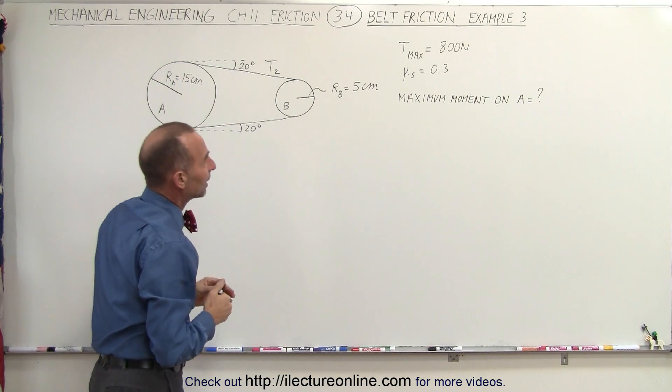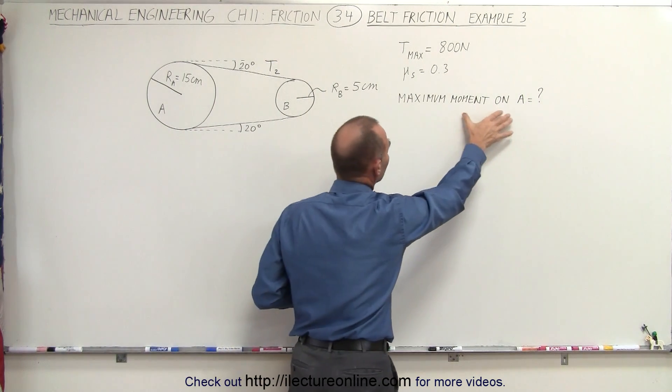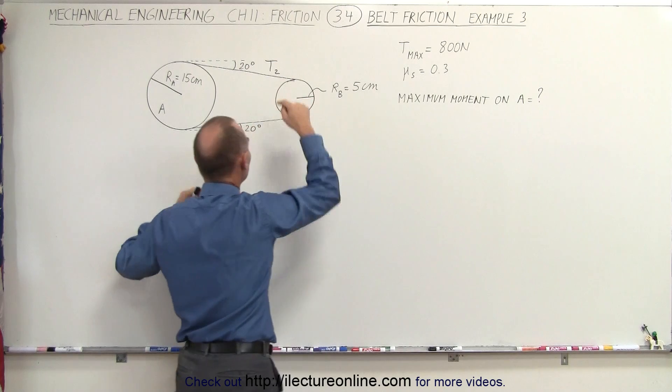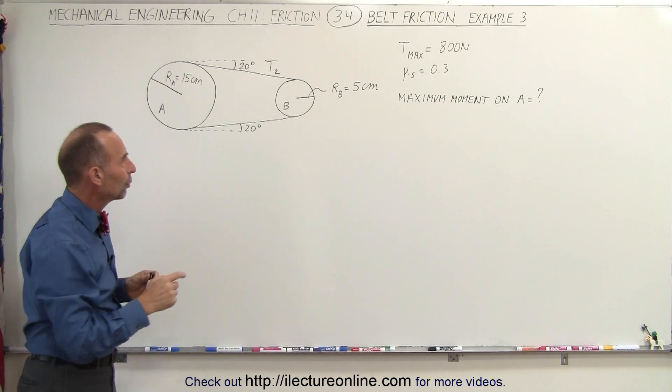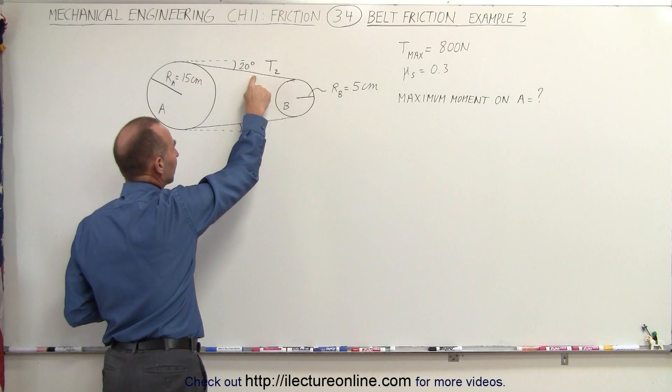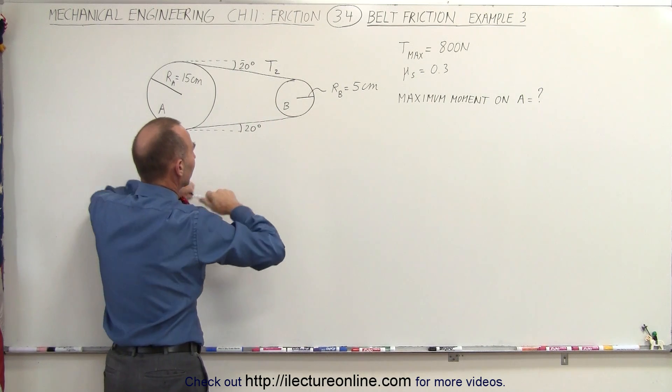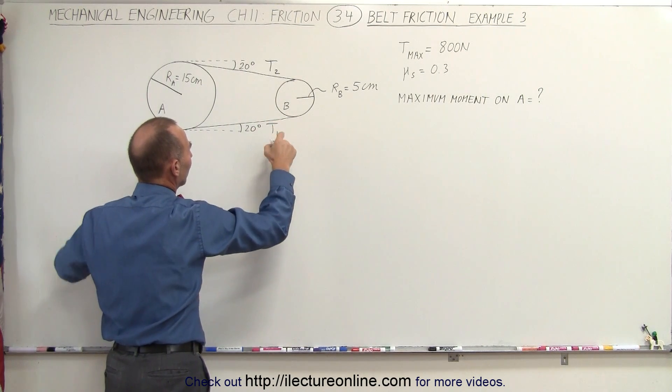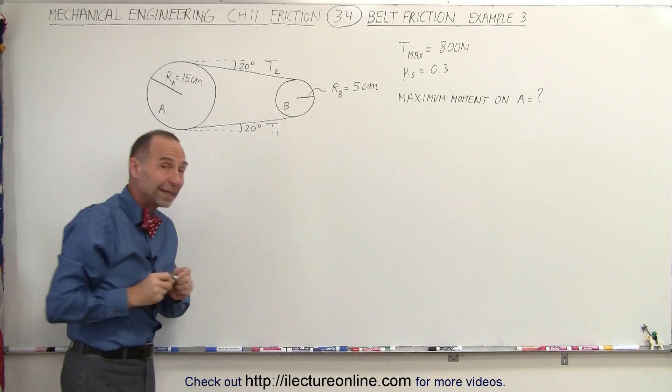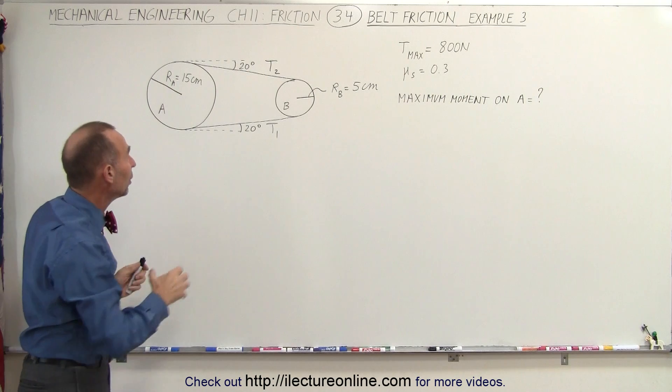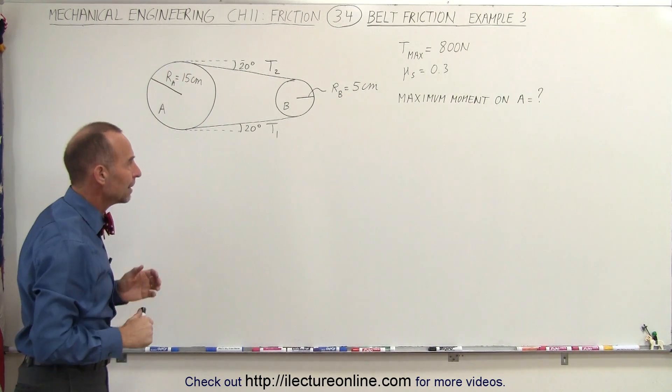What we're trying to calculate is the maximum moment we can apply on A using this belt drive system like this. So that means we're going to have to find the tension over here and the tension on the other side of the belt, T1. And that will depend upon what happens on pulley B right here. Once we calculate T2 and T1, we can then calculate the moment on pulley A.